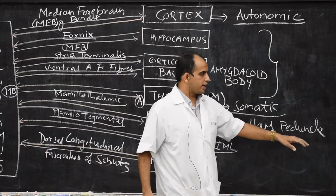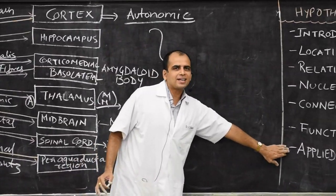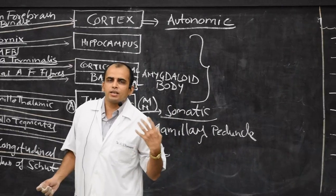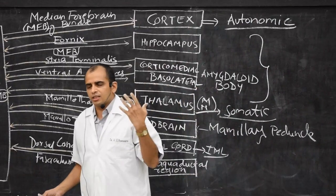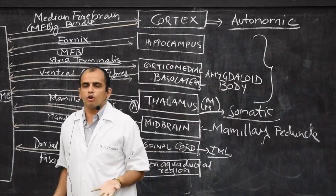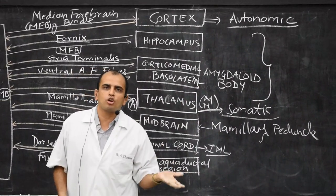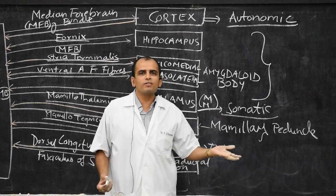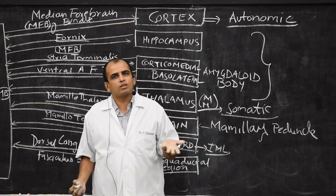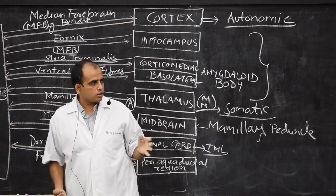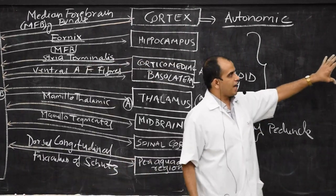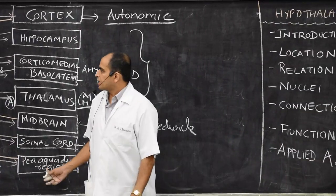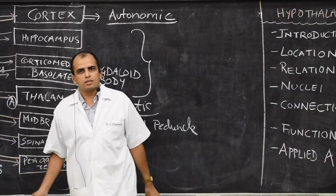Applied anatomy includes conditions like diabetes insipidus, Fröhlich's syndrome, and disturbances of thyroid hormones, growth hormones, and various steroids. This is how you can describe the hypothalamus. Thank you.